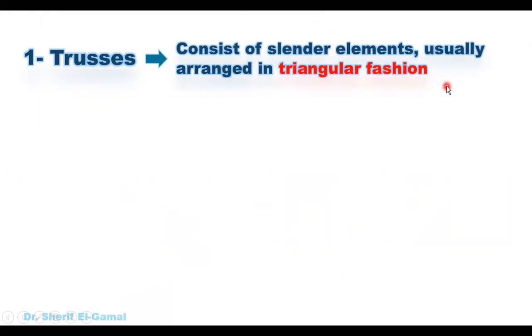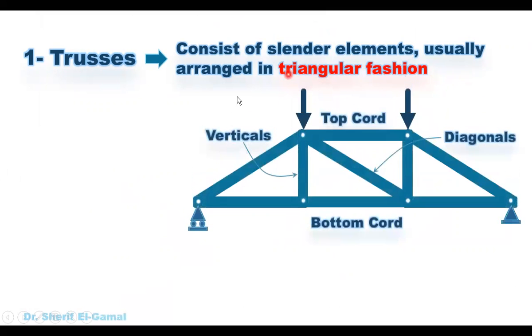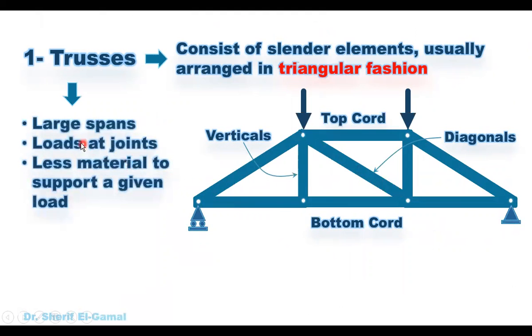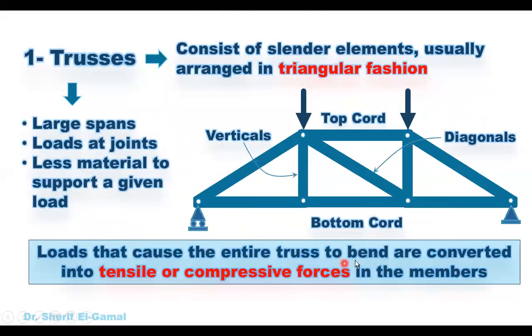Trusses consist of linear elements usually arranged in a triangular fashion. A typical truss consists of a bottom chord, usually under tension in a simply supported truss, a top chord usually in compression, and vertical and diagonal members. Trusses can be used for large spans, and loads on trusses should be applied only at the joints — not at the middle of a truss element. Trusses use less material to support a given load, and any forces applied at the joints are converted to tensile or compression forces in the members.